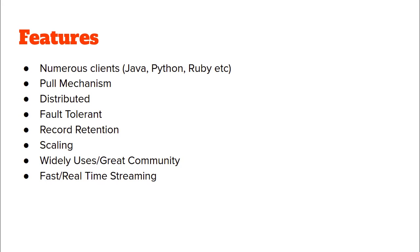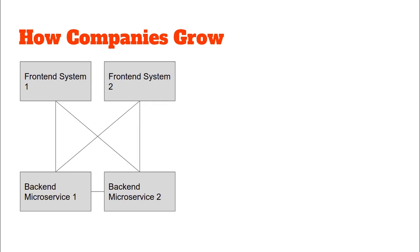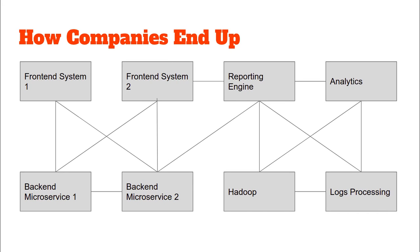Now let us discuss a data integration problem that usually occurs when organizations start getting large. How does a company start off? Generally it has very few services — say a front-end system and a back-end system communicating via TCP. When the company grows, we might have different front-end systems and different back-end microservices, and the number of data interactions increases. Data source and destination systems keep on growing, and so do the number of data integration problems, ending up in a situation where so many systems have to talk to so many other systems that it just becomes a mess.